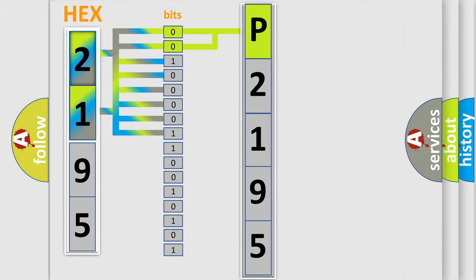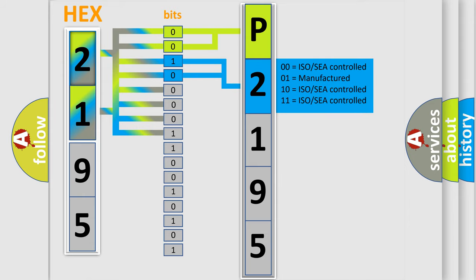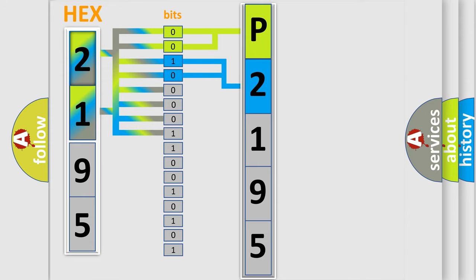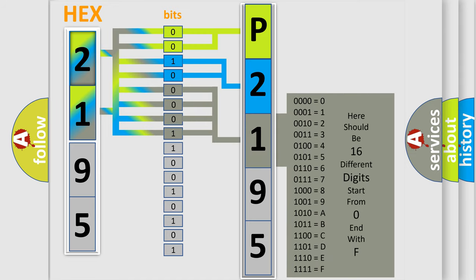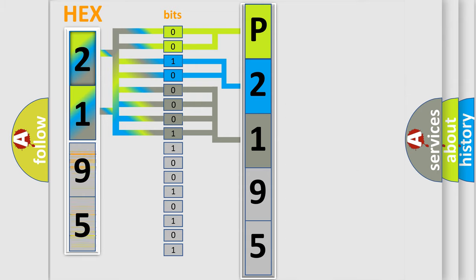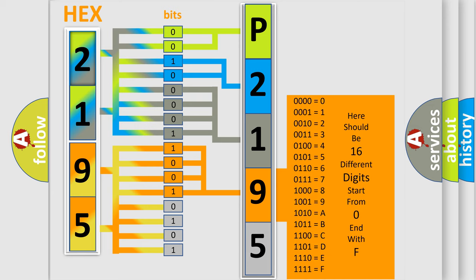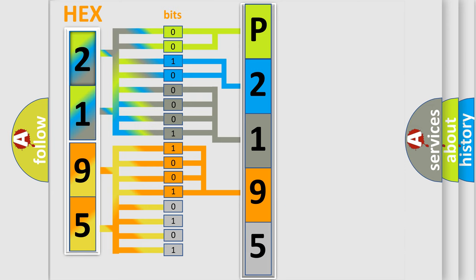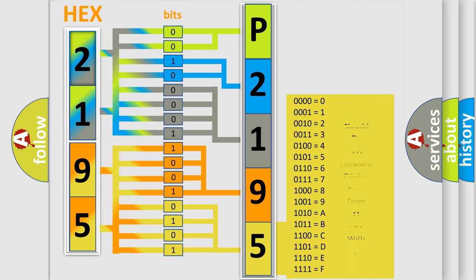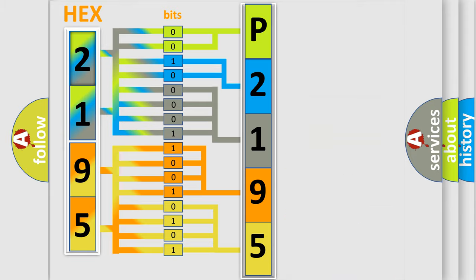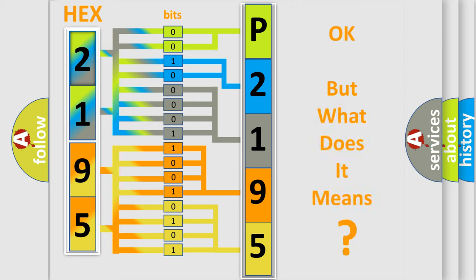The next two bits determine the second character. The last bits of the first byte define the third character of the code. The second byte is composed of a combination of eight bits. The first four bits determine the fourth character of the code, and the combination of the last four bits defines the fifth character. A single byte conceals 256 possible combinations. We now know in what way the diagnostic tool translates the received information into a more comprehensible format.